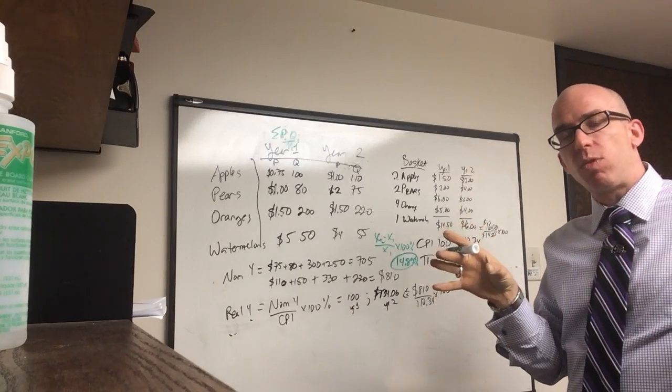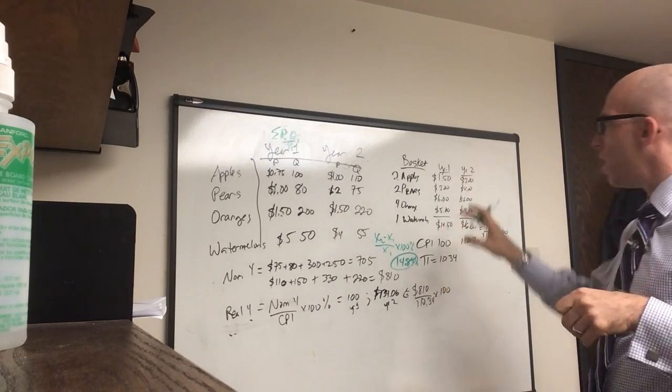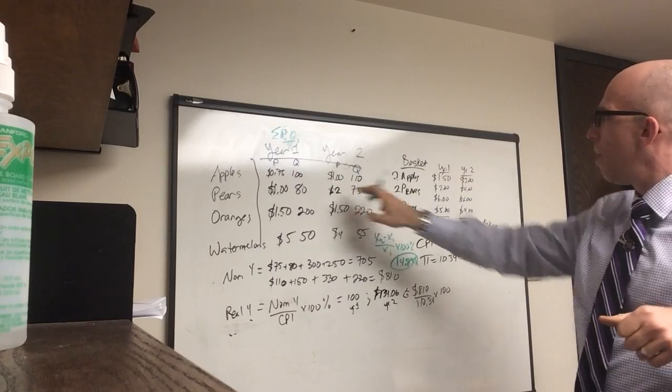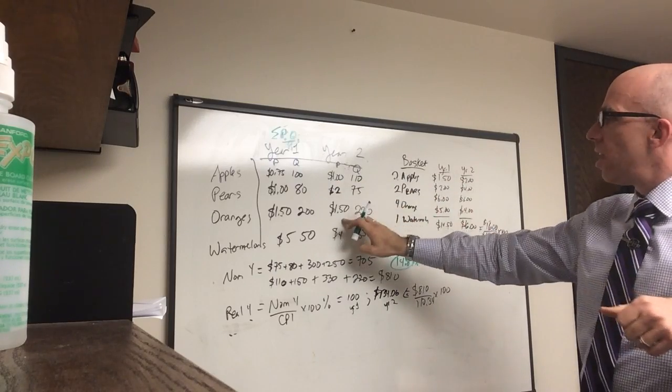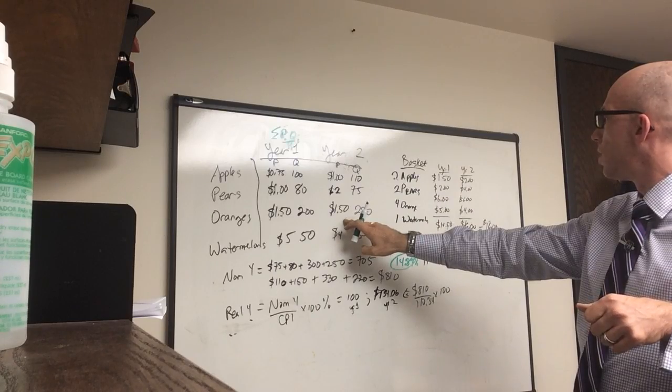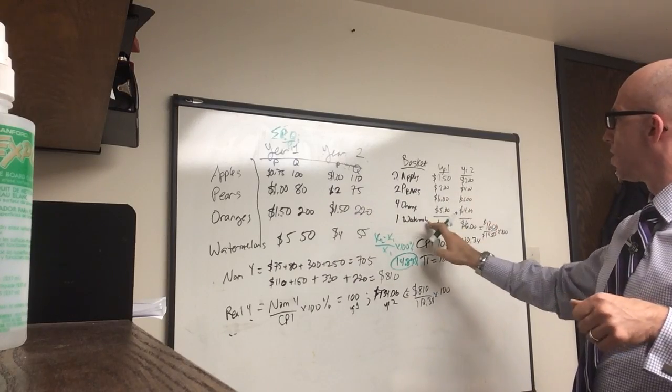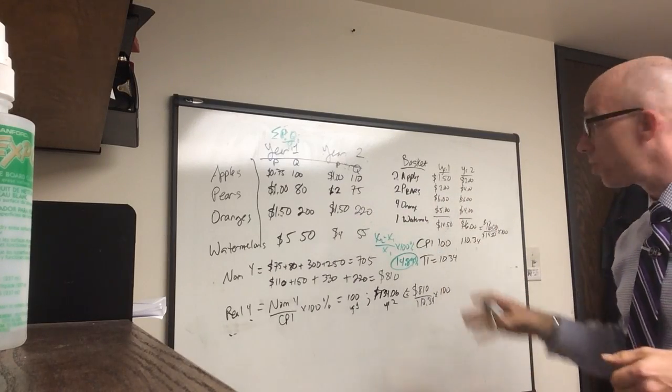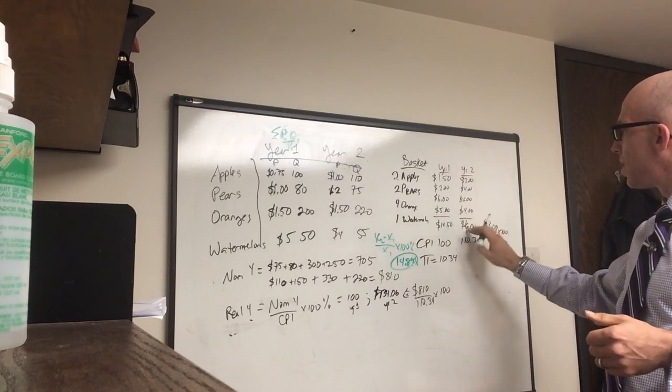And then remember, we convert it to an index based on 100. So I take this, two apples, $2.00, $4.00 for pears, $1.50 for oranges, four oranges are going to be $6.00, and then one watermelon is now $4.00. So these four items add up to $16.00.